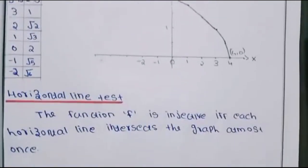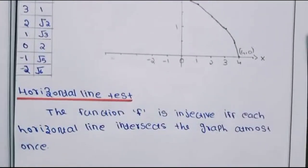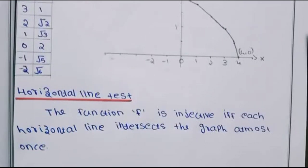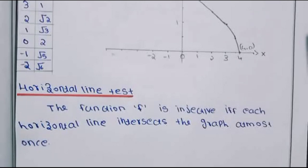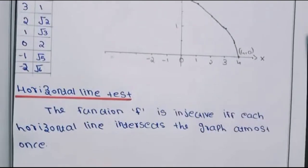Now we have the horizontal line test. A function f is injective if and only if each horizontal line intersects the graph at most once. That is, a horizontal line parallel to the x-axis will not touch more than one point on that graph. This means the function is a one-to-one function. This is the horizontal line test.